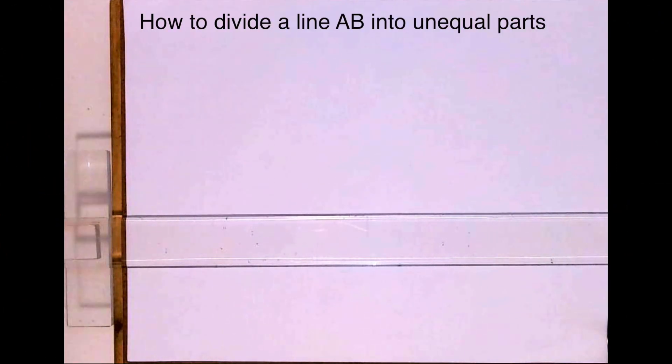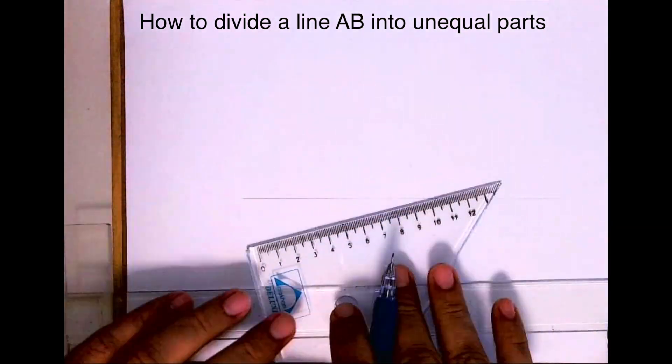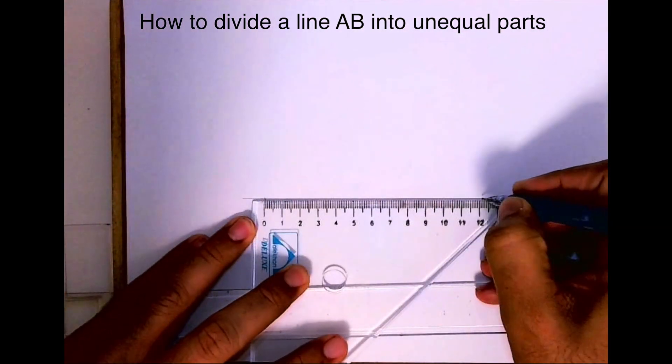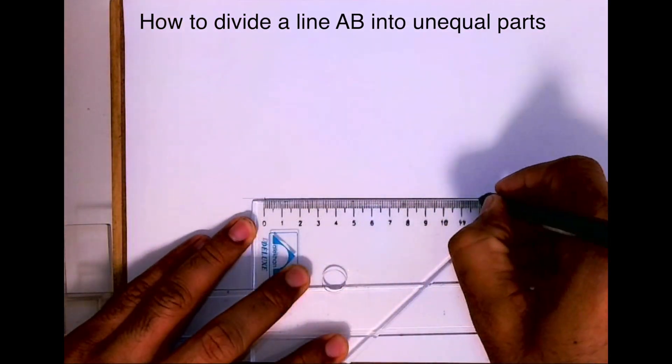Welcome to technical drawing. Today we'll see how to divide a line AB into unequal parts. What do you mean by unequal parts? Half, one third, one fourth, one fifth, that way. So first I will draw line AB.